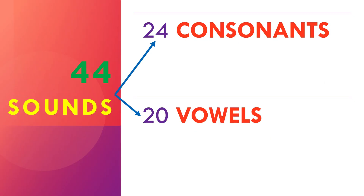These 44 sounds are divided into two categories: we have 24 consonant sounds and 20 vowel sounds.